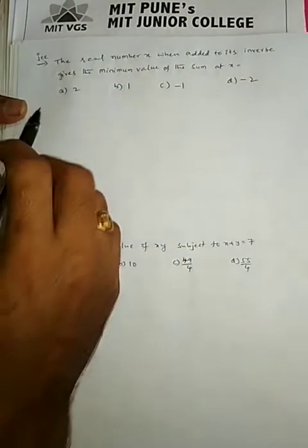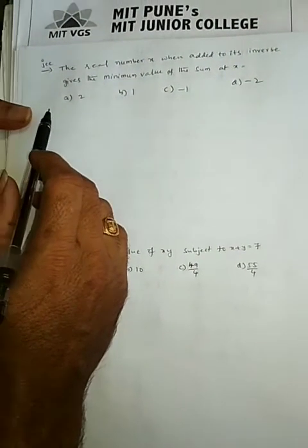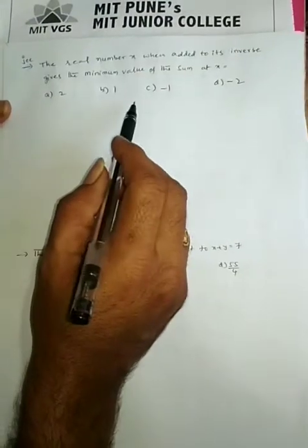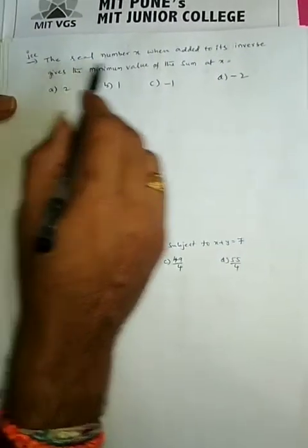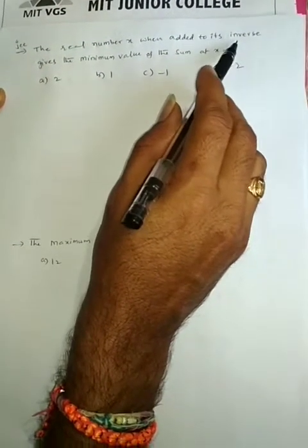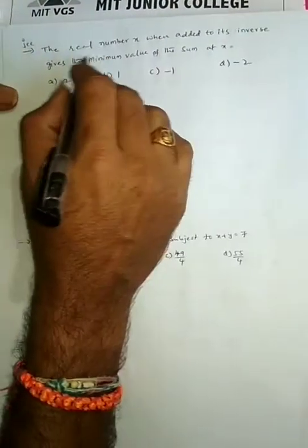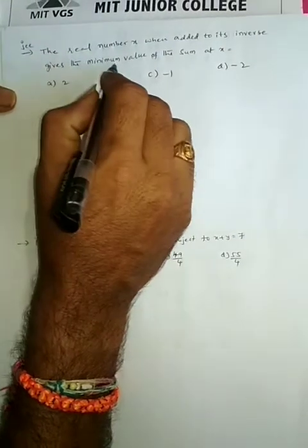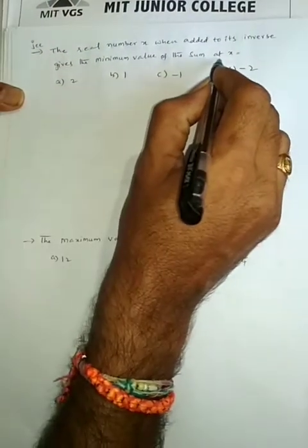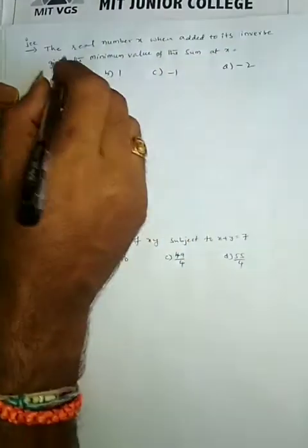Dear students, here is how the JEE means question based on maxima and minima: the real number x when added to its inverse gives the minimum value of the sum at x is equal to dash.